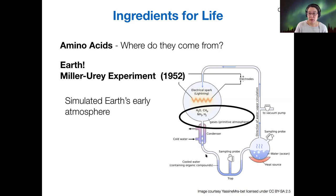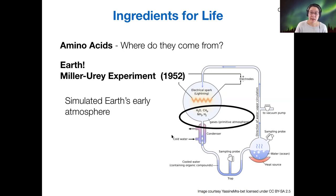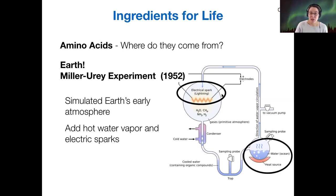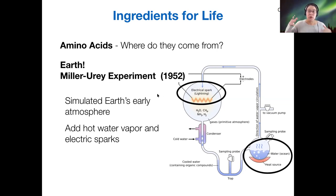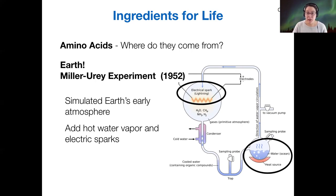Essentially what they did was they put gases such as water, methane, ammonia, and hydrogen — resembling earth's early atmosphere — into a closed system. Then through that closed system they flowed hot water, heated it up on one side, drove it through the gases, and applied electrical sparks.